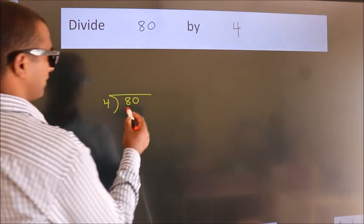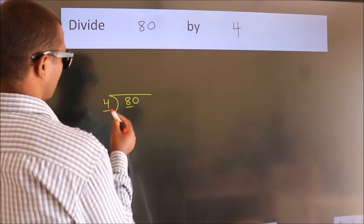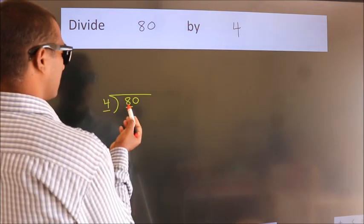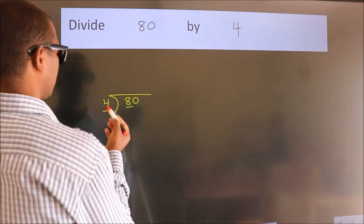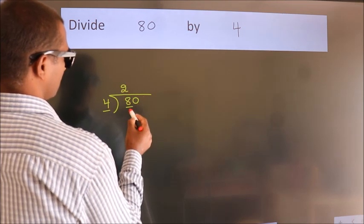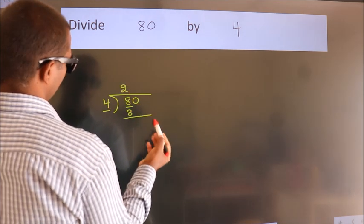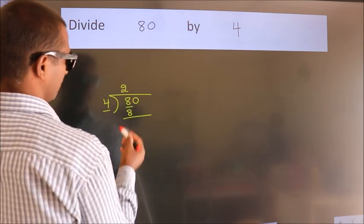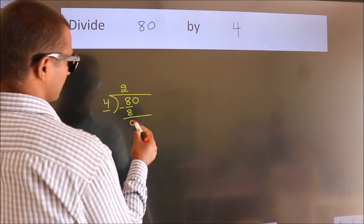Here we have 8, here 4. When do we get 8 in the 4 table? 4 twos, 8. Now we should subtract. We get 0.